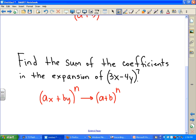So in this example, we could take the coefficients 3 minus 4, which is negative 1, and raise that to the 7th power. So what is negative 1 raised to the 7th power? That would be negative 1. So the sum of the coefficients for all of these 8 terms would be negative 1.